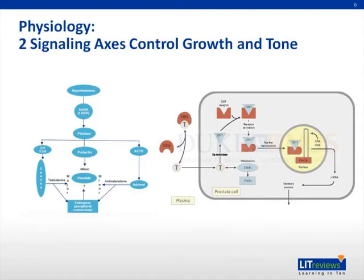There are two primary signaling axes that regulate growth and function of the prostate: testosterone as well as adrenergic innervation. Testosterone synthesis, which is shown on these two schematics, is synthesized primarily by the testicles but also by the adrenal gland, and its synthesis is regulated by pituitary signaling. Testosterone is converted to its active form, dihydrotestosterone or DHT, by an enzyme expressed within the prostate cells called 5-alpha reductase. DHT then stimulates transcriptional upregulation of many genes involved in prostate growth.